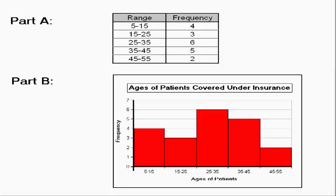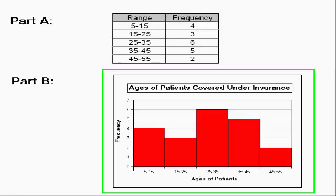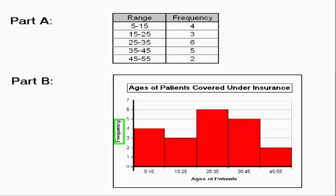So here I've taken our frequency table and used the data to transform it into a frequency histogram. I started off by labeling the y-axis with the title frequency. I labeled the x-axis ages of patients. I've given the frequency histogram the title ages of patients covered under insurance. I've created bars or columns that correspond to the different ranges in our frequency table. So you can see that for range 5 to 15, there's a corresponding bar in the histogram. The same is true for 15 to 25, and so on and so forth.